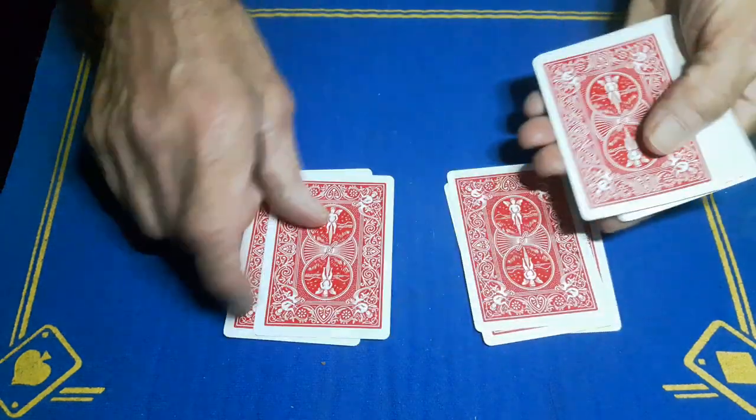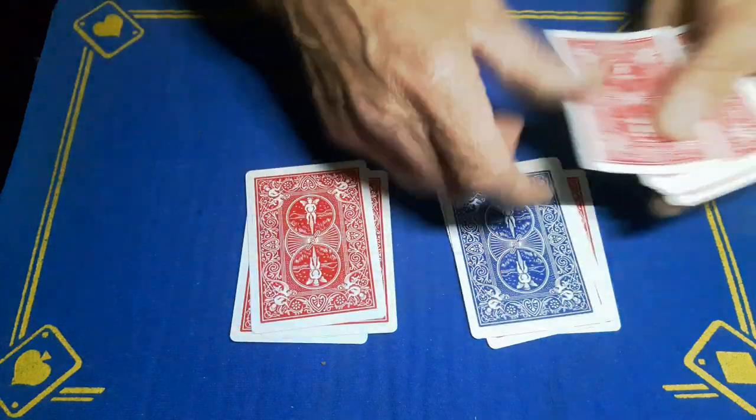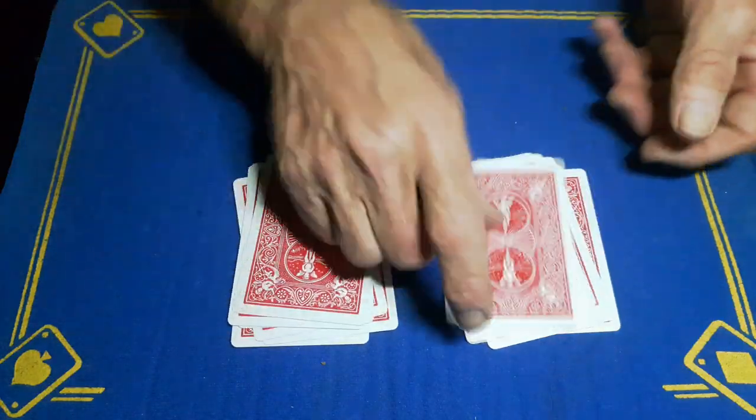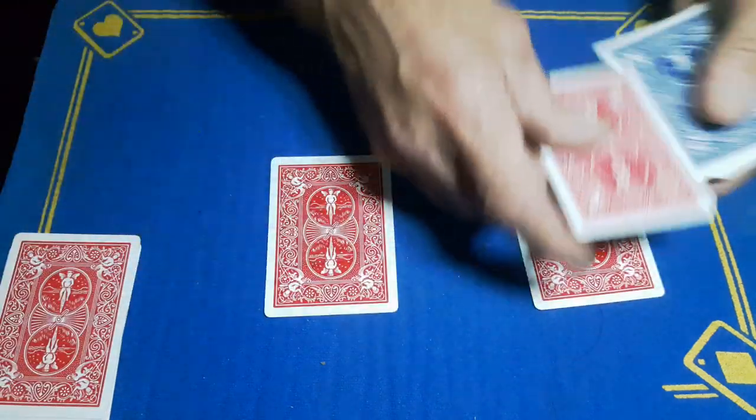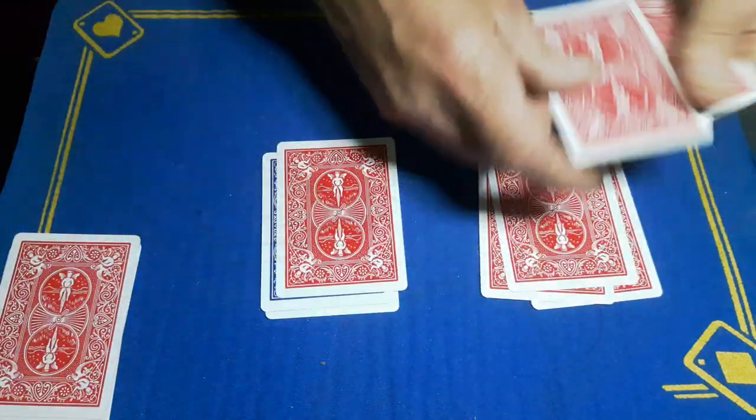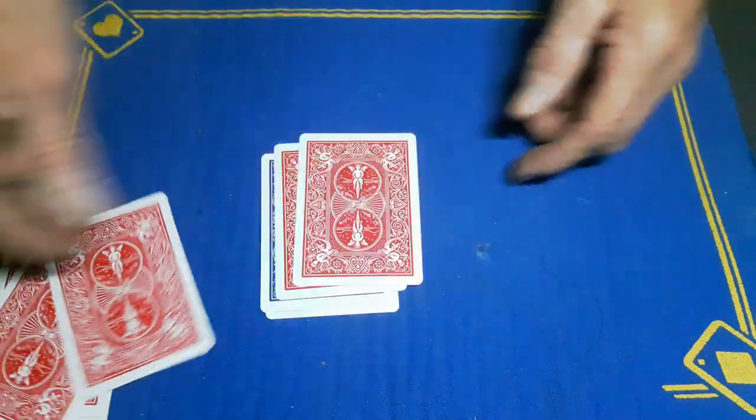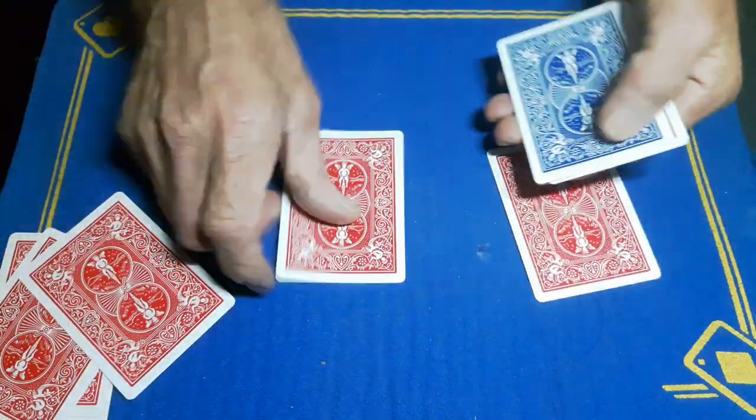And you're just going to eliminate the packet which does not contain the blue card. So we get rid of that packet, just deal through, we'll get rid of this packet. You will be left with just two cards.